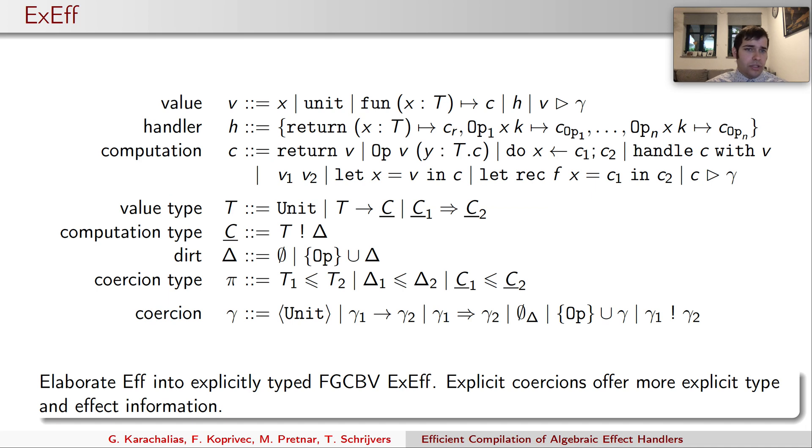To really optimize during the compilation, we need additional static type and effect information. XF is a fine-grained call-by-value language that adds explicit type and effect information and explicit coercions for subtyping. Coercions offer a nice way to reconstruct the type information, and are also an inexpensive sanity check inside the compiler.